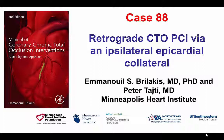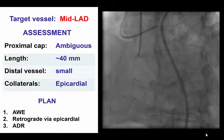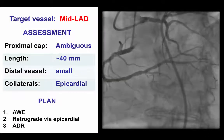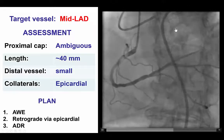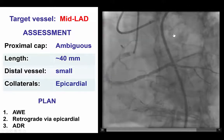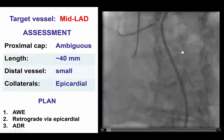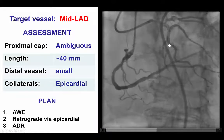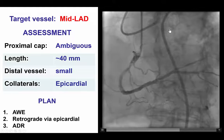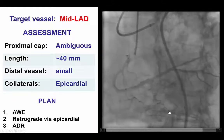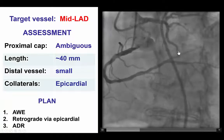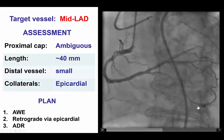This is a case of retrograde CTO intervention through an ipsilateral epicardial collateral. This is the baseline dual angiography. The patient had previously a stent placed from the LAD into a large diagonal branch that essentially jailed the mid LAD, which was occluded at the time. Right now the LAD is occluded, and the mid and distal LAD are filling retrograde via a large epicardial collateral from the second diagonal branch.